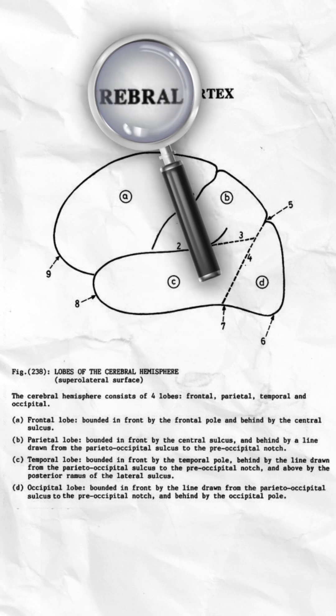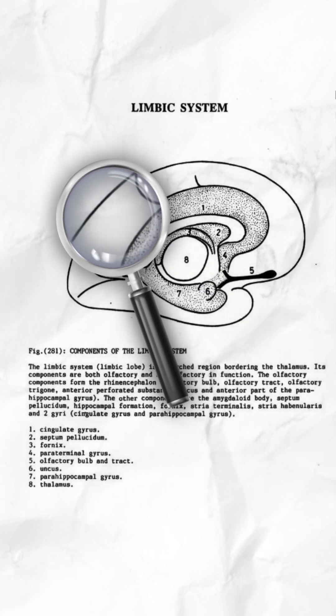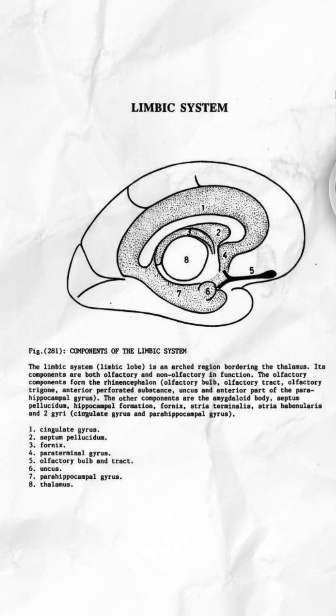Cortex is involved with decision-making, working memory, impulse control, and planning. While the limbic system is involved with generating emotions, long-term declarative memories, and reward system.